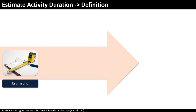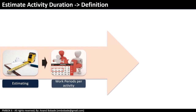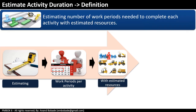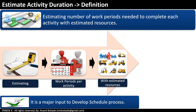Let's look at the process definition. Estimate Activity Duration is a process of estimating the number of work periods needed to complete each activity with estimated resources. It is a major input to the Develop Schedule process, making it a very important step when finalizing the schedule.